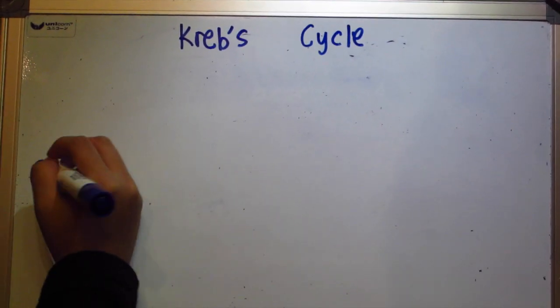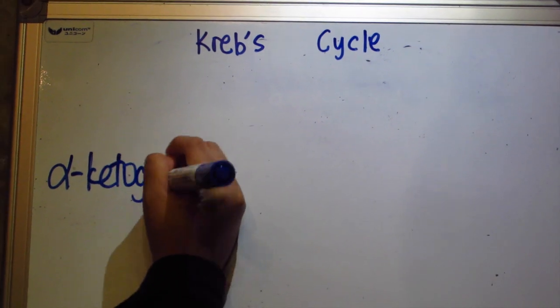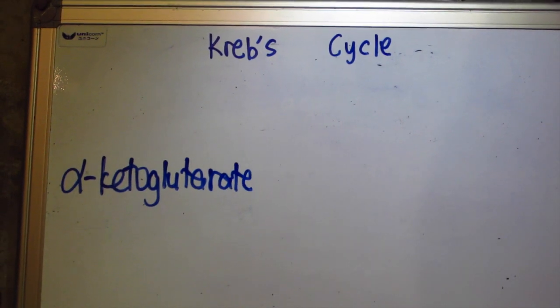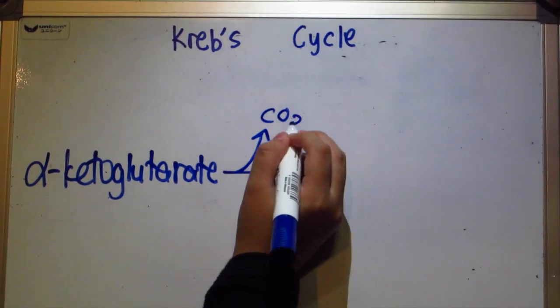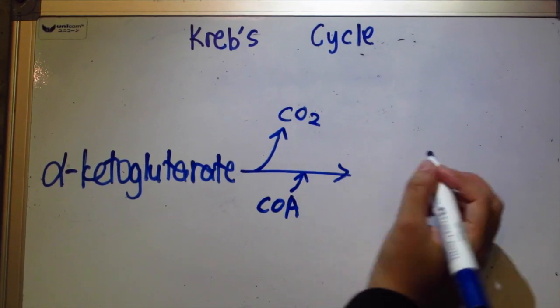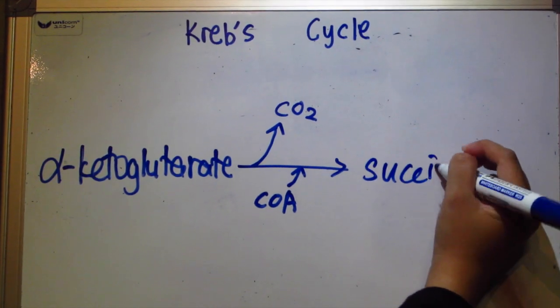Step 4, oxidative decarboxylation. Alpha-ketoglutarate is oxidized, loses a molecule of carbon dioxide and combines with coenzyme A to form a 4-carbon compound succinyl-CoA.